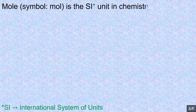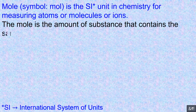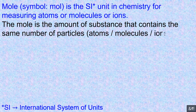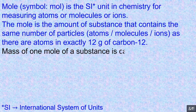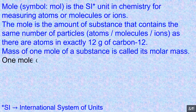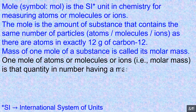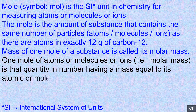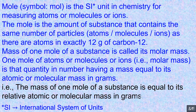Mole is the SI unit in chemistry for measuring atoms, molecules or ions. The mole is the amount of substance that contains the same number of particles — atoms, molecules or ions — as there are atoms in exactly 12 g of carbon-12. The mass of one mole of a substance is called its molar mass. One mole of atoms or molecules or ions, that is molar mass, is that quantity having a mass equal to its atomic or molecular mass in grams. The mass of one mole of a substance is equal to its relative atomic or molecular mass in grams.